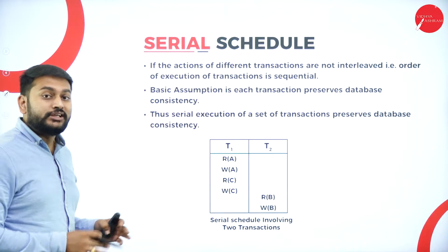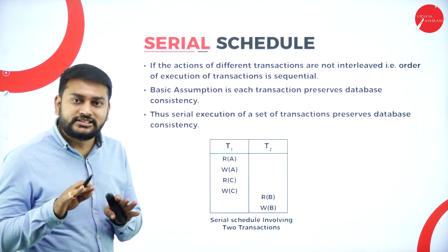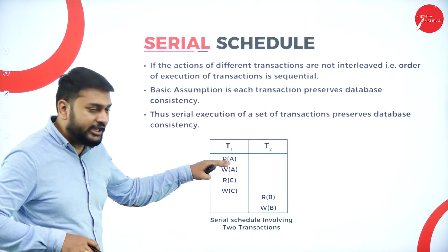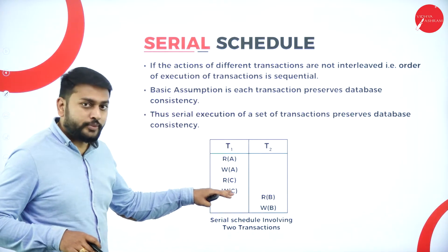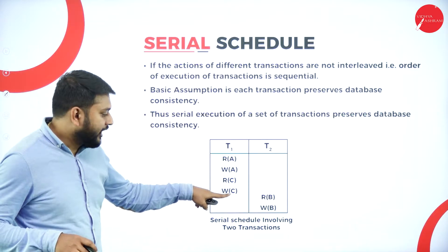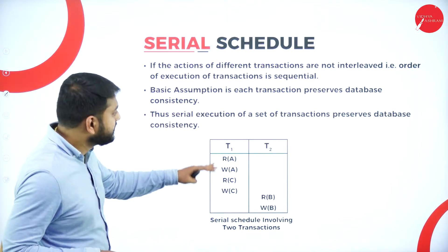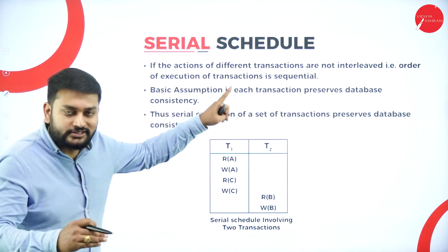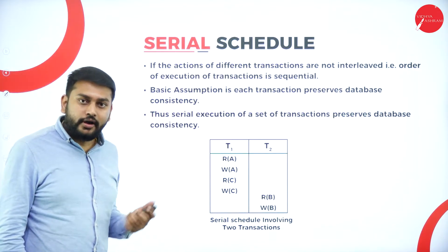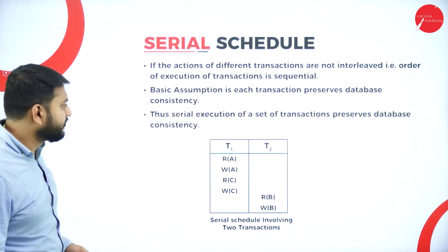Serial schedule means the tasks will be executed one by one. At the same time, both two transactions will not happen — that's what you need to observe. Here I have the tasks: I will read and write, read and write. I'm reading file A and writing file A, reading file C, writing file C, then read B, write B. So the transaction is happening serially, one after the other, sequentially. At the same time, nothing else is happening. This is what I will call a serial schedule.